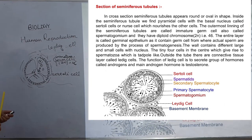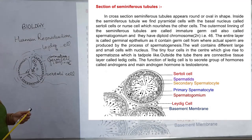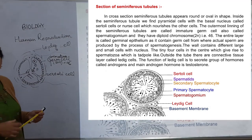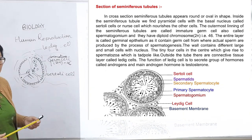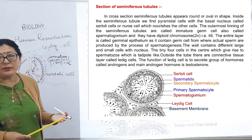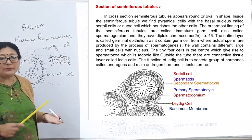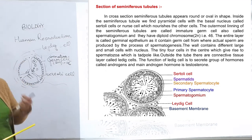The most important androgen hormone is testosterone, which is secreted by the Leydig cells. Because of this, the testes are called a mixed gland, having both exocrine and endocrine function.